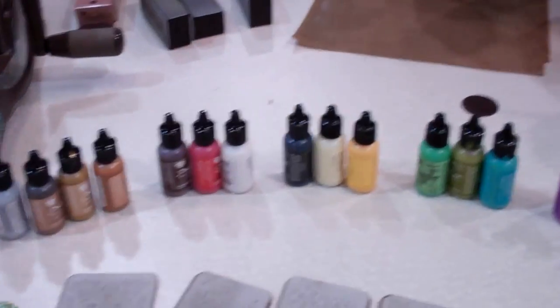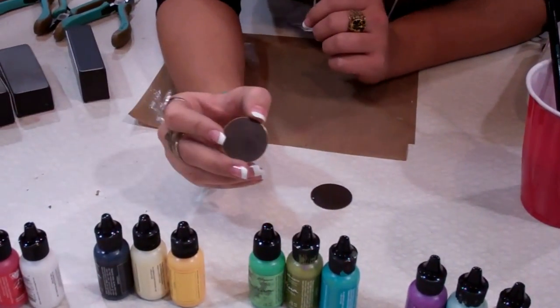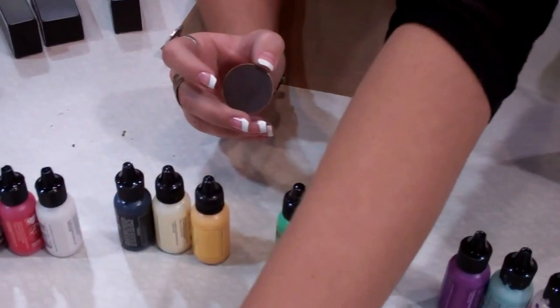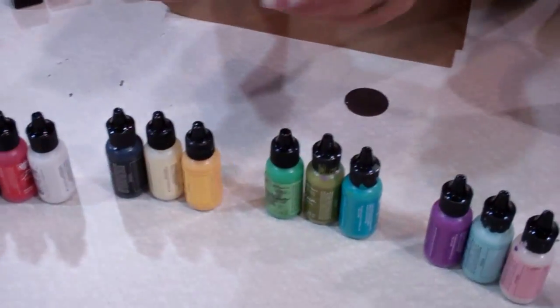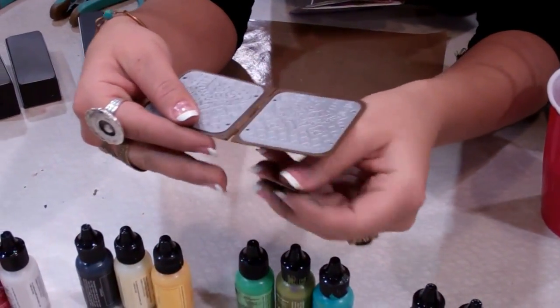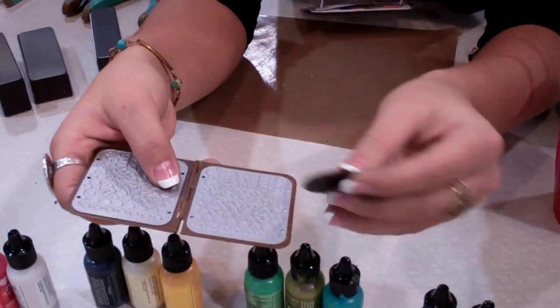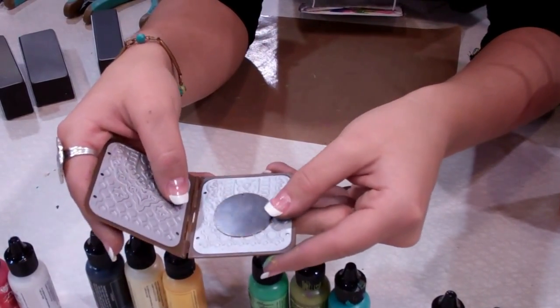First, I'm going to take one of our natural brass blanks and choose a deco emboss folder. I'm going to place that blank in the folder where I want the design to show.